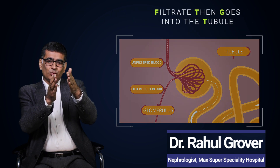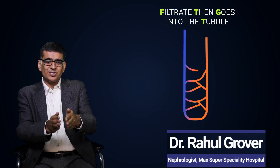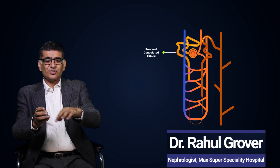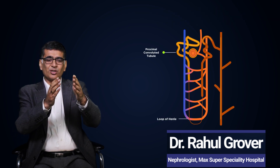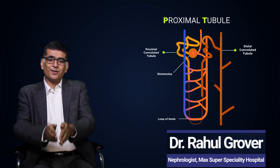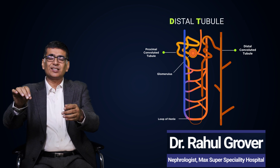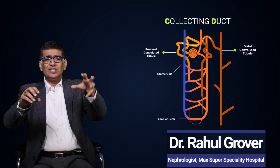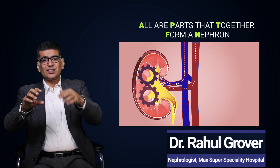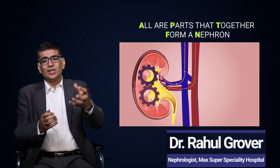This filtrate then goes into the tubule, which is the next part. Over here, there are some structures which are called the proximal tubule, a loop of Henle, and a distal tubule, then a collecting duct. These all are the parts which together form what we call the nephron.